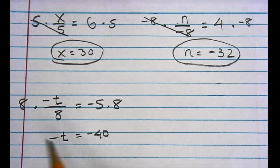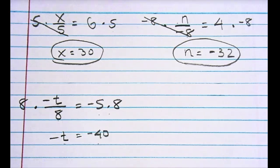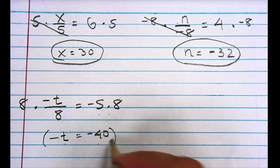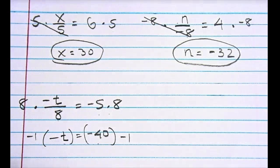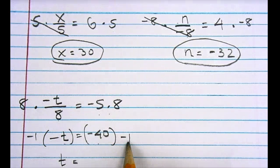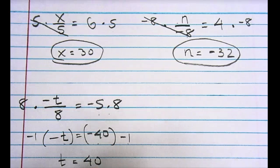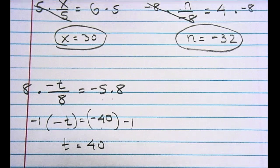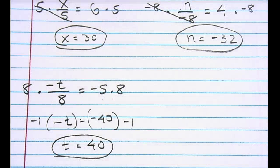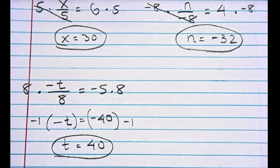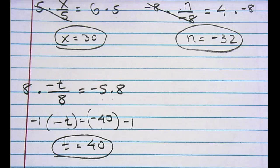I can think of this as: the opposite of t is equal to negative 40. To solve this, I'm going to multiply both sides by negative 1. If I multiply this side by negative 1, I get positive t. If I multiply the other side by negative 1, I get positive 40. So for this problem, t is equal to 40. And that's how I do problems where I have a variable divided by a number in a one-step equation. I hope this video helps — I have another video on multiplying by the inverse coming up.